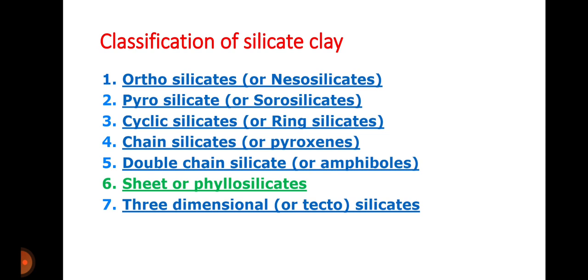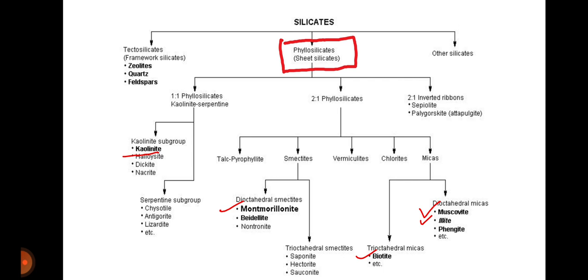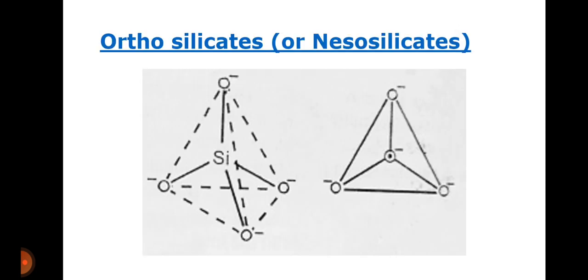Silicate clay is generally classified into seven types: orthosilicates or neosilicates, pyrosilicates or sorosilicates, cyclic silicates, chain silicates, double chain silicates, phyllosilicates, and three-dimensional or tectosilicates. Among these, phyllosilicate is the most important silicate clay because all the clay minerals like kaolinite, montmorillonite, biotite, muscovite, and illite all belong to the phyllosilicate group.